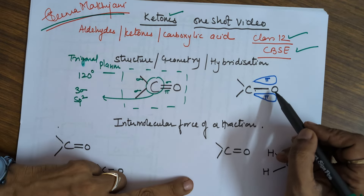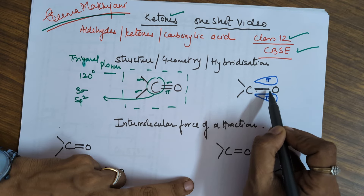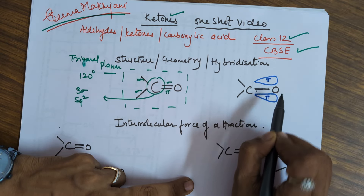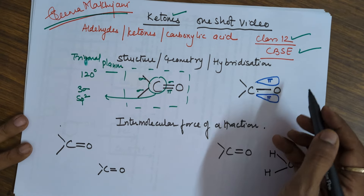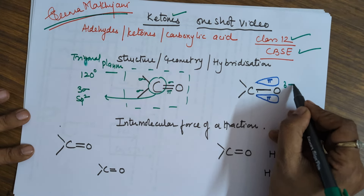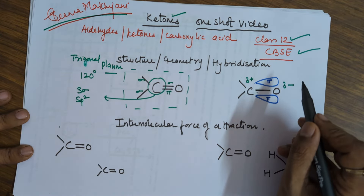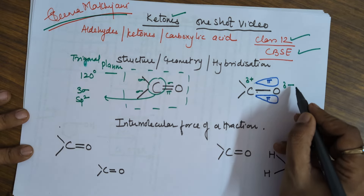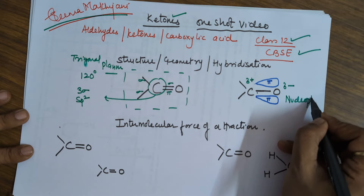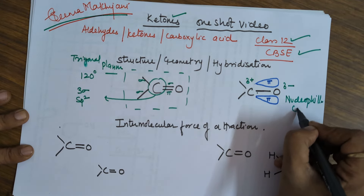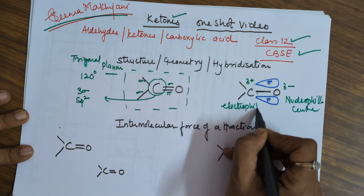Emphasizing on the pi bond — as you can see, the pi electron cloud above and below this particular bond is more towards oxygen, owing to the reason that oxygen is more electronegative than carbon. Therefore, your oxygen gets a slight negative charge and carbon gets a slight positive charge. Therefore, this oxygen is electron-rich — we call it the nucleophilic center — while carbon is your electrophilic center.